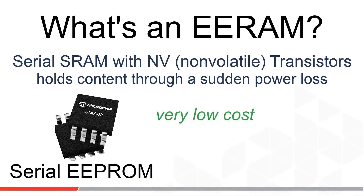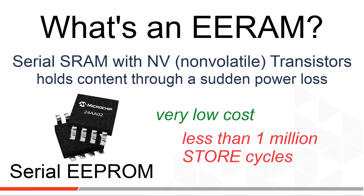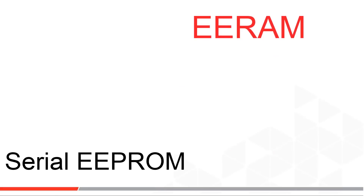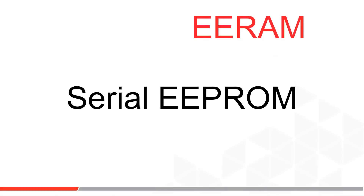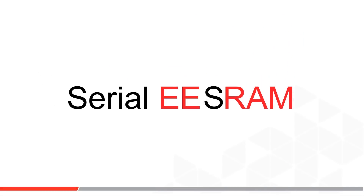Serial EEPROM is by far the cheapest way to go and is selected by designers if their applications are rewritten less than 1 million times in the product's total lifespan. Remember that EEPROM data sheets only promise 1 million store cycles for every page or byte of memory. EERAM fixes this by putting an SRAM in place of the PROM.